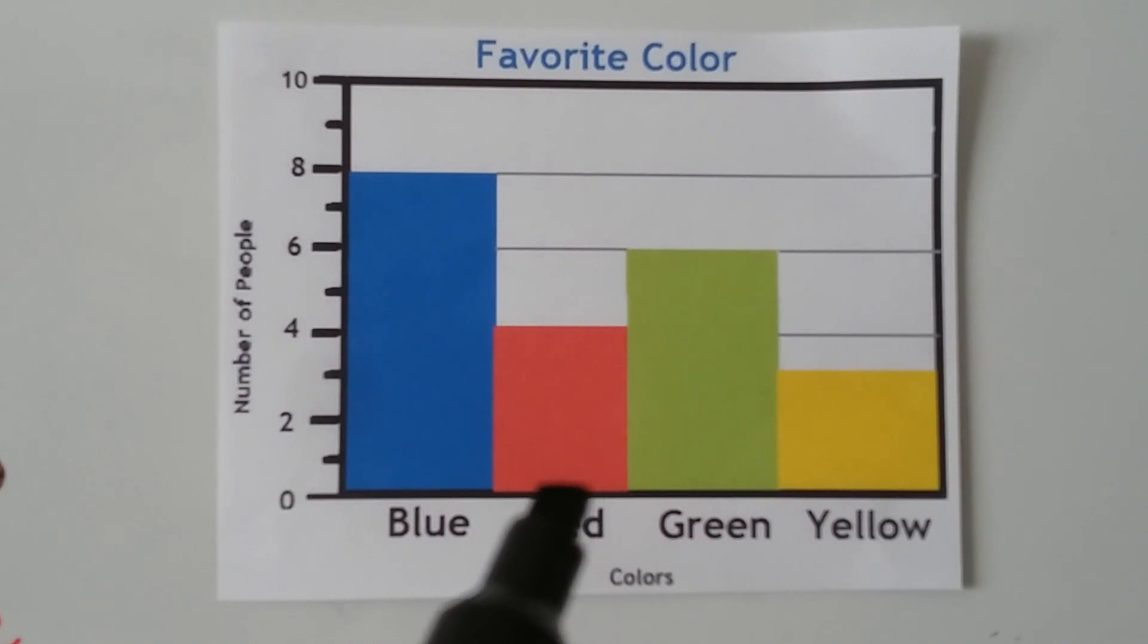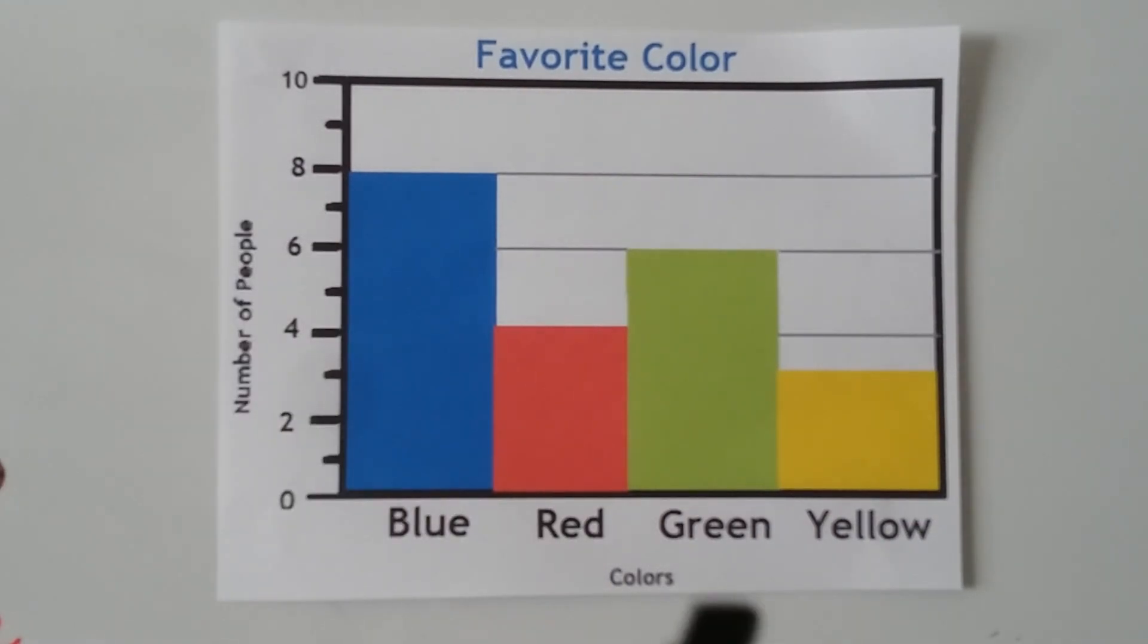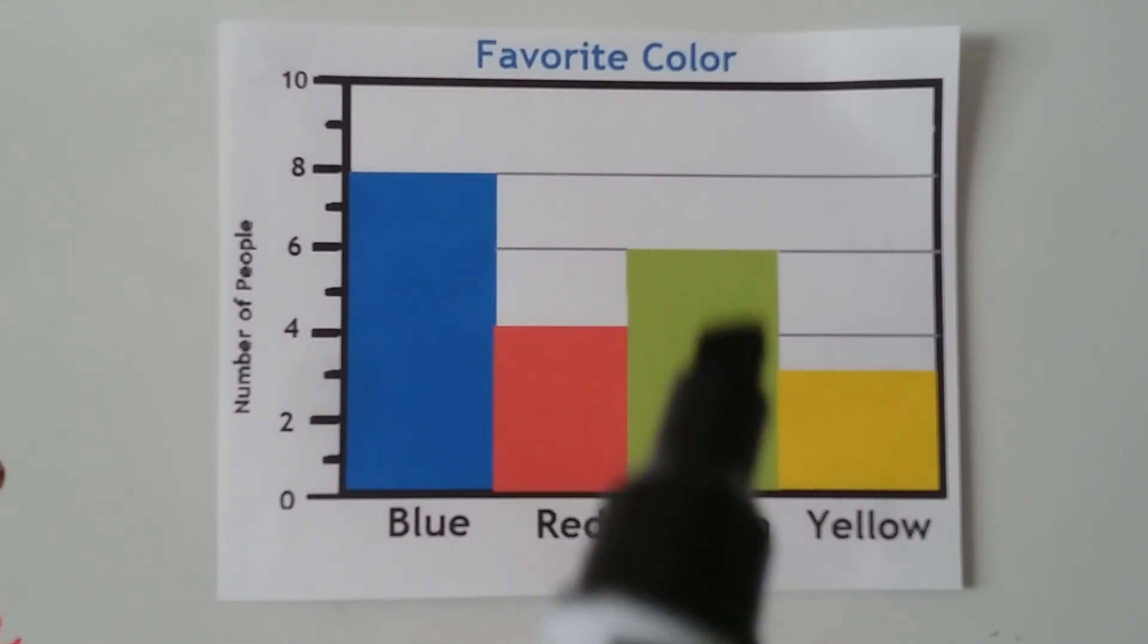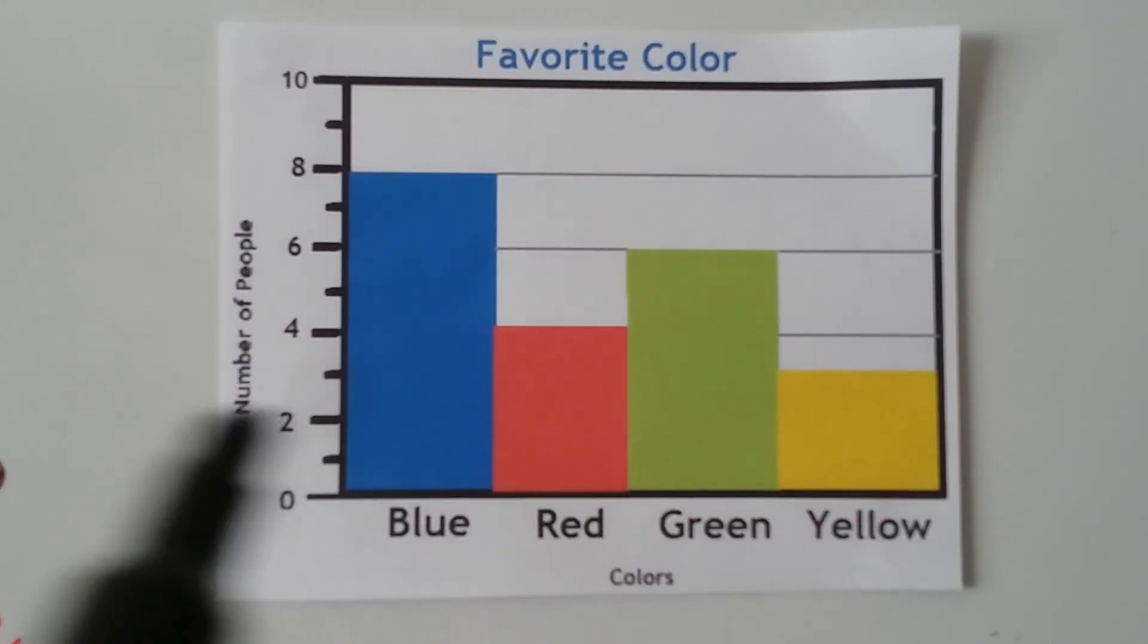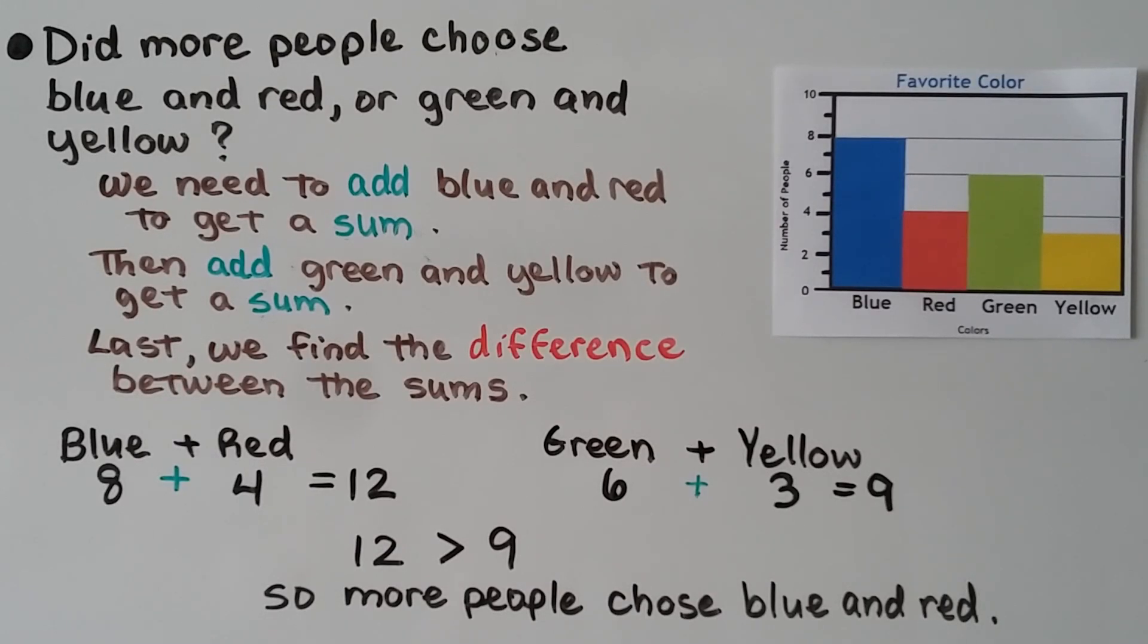We need to add blue and red, so we're going to need to add eight and four. Then we're going to need to add green and yellow, so we need to add six and three. It's in between the two and four, so it must be a three. We need 8 + 4, then we need 6 + 3. Eight blue and four red equals twelve, and six green and three yellow equals nine. Twelve is greater than nine, so more people chose blue and red.